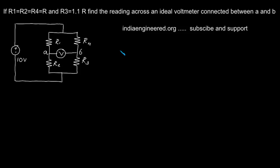This question was asked in GATE 2005. It is given that R1 = R2 = R4 = R, and R3 = 1.1R. We are asked to find the reading of the ideal voltmeter.